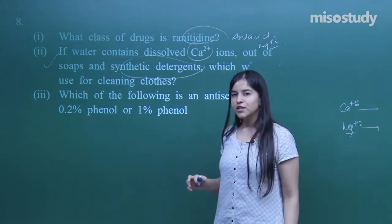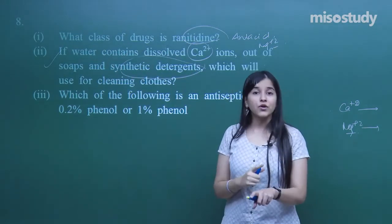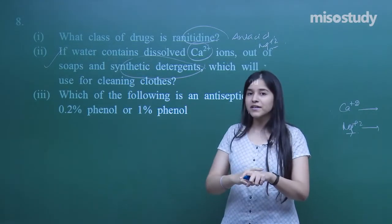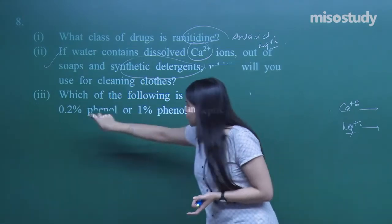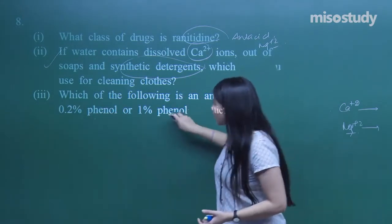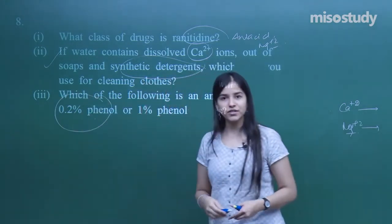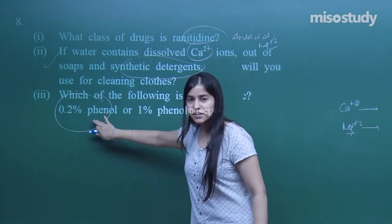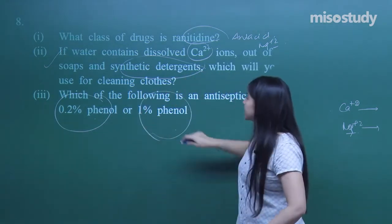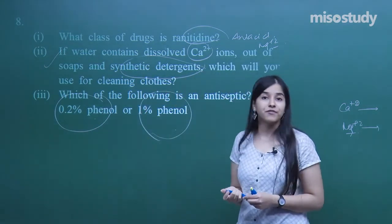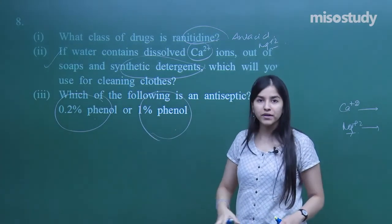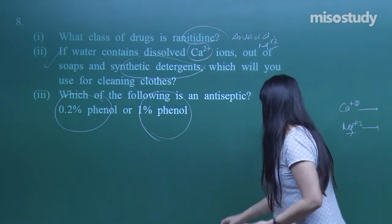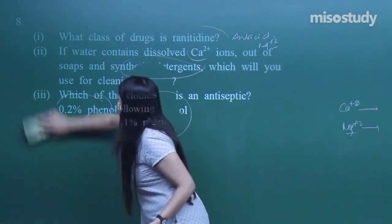Which of the following is an antiseptic? Antiseptic is used on a living tissue, for my skin, I need a milder one, not a strong one. Out of the two, which one is mild? The one having less concentration. Whereas 1% phenol is used as a disinfectant on the non-living things, maybe on a floor for mopping.